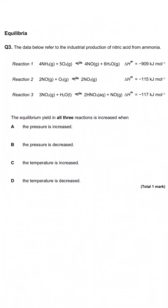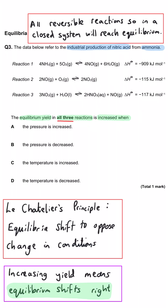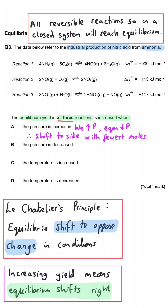The data below refers to the industrial production of nitric acid from ammonia. The equilibrium yield in all three reactions is increased when? If you increase the pressure, the equilibrium will shift towards the side with the fewest molecules. In reaction one there are nine molecules on the left and ten on the right, so the equilibrium will actually shift left. So A is incorrect.